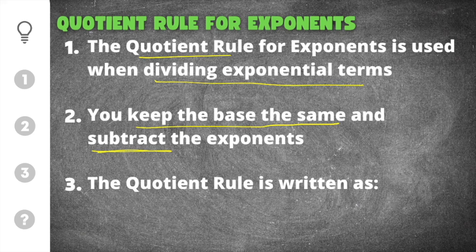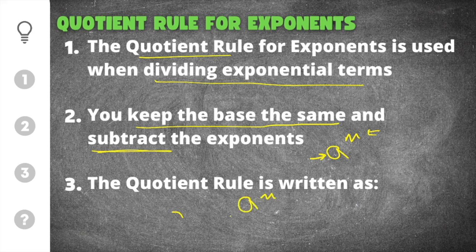An exponential term is written like this: a to the m power. The base is the a and the m is the exponent. Whatever this a is will stay the same, and for the exponents you will subtract. That means the quotient rule is written as a to the m divided by a to the n is equal to a to the m minus n.